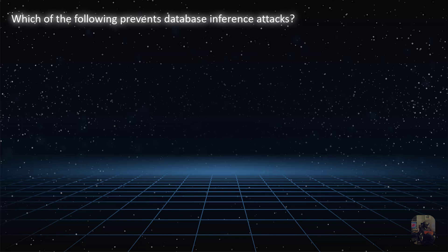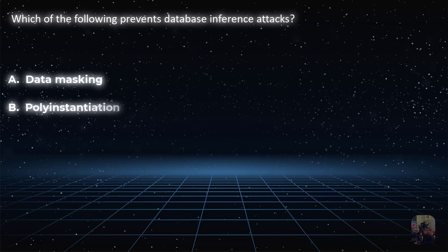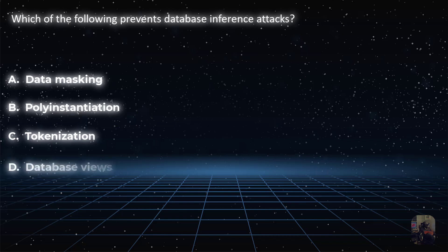Anyway, which of the following prevents database inference attacks? Choice A: data masking. Choice B: poly instantiation — that's a tough word to say when you've been drinking. Choice C: tokenization. Or choice D: database views?